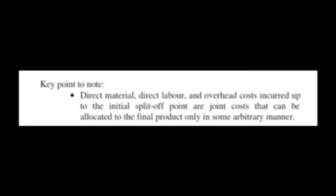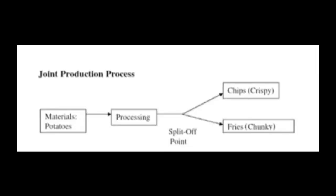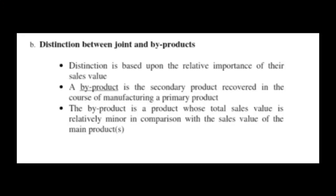Let us take a look at the joint production process. Suppose we have a material — potatoes — and while being processed, there will be a split-off point where we decide what should be made from those potatoes. We have two joint products: chips and fries. The company has to decide at the split-off point how much potatoes should be allocated to chips and how much to fries.